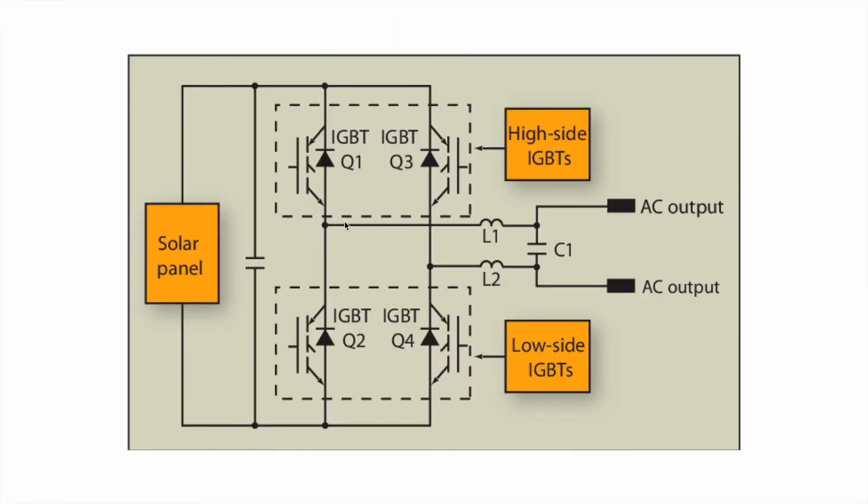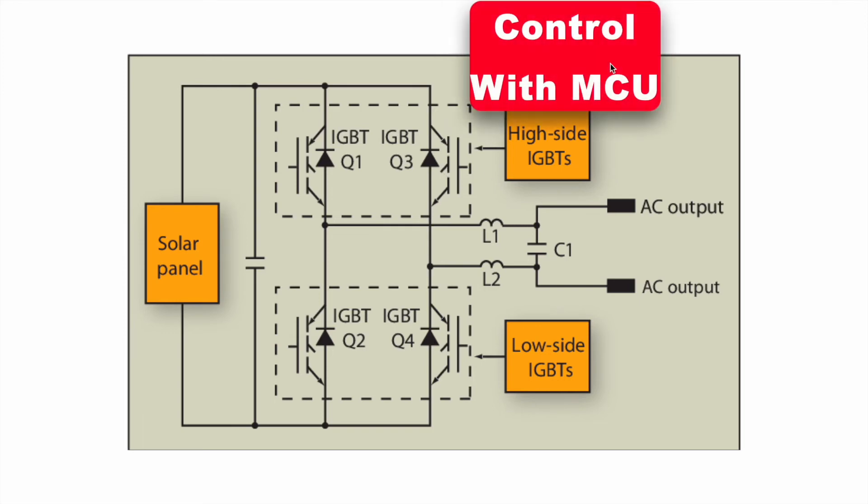To turn on and off, we can use very high switching device like IGBT. So here, four IGBTs are used: Q1, Q2, Q3 and Q4. And the load, which is AC, is connected in between. And these IGBTs can be controlled by controlling its gate terminal, and this we can easily control with the help of microcontroller.